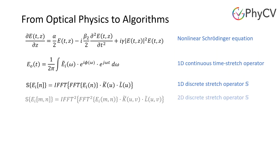Next, we can come to the 2D discrete stretch operator S as shown here. M and N represent spatial coordinates in the digital image, and U and V are the corresponding frequency coordinates. This 2D discrete stretch operator emulates an image propagating through a diffractive medium, just like a laser pulse propagating through a dispersive medium, which is the central process that governs photonic time stretch. This demonstrates how the algorithm is inspired by optical physics.